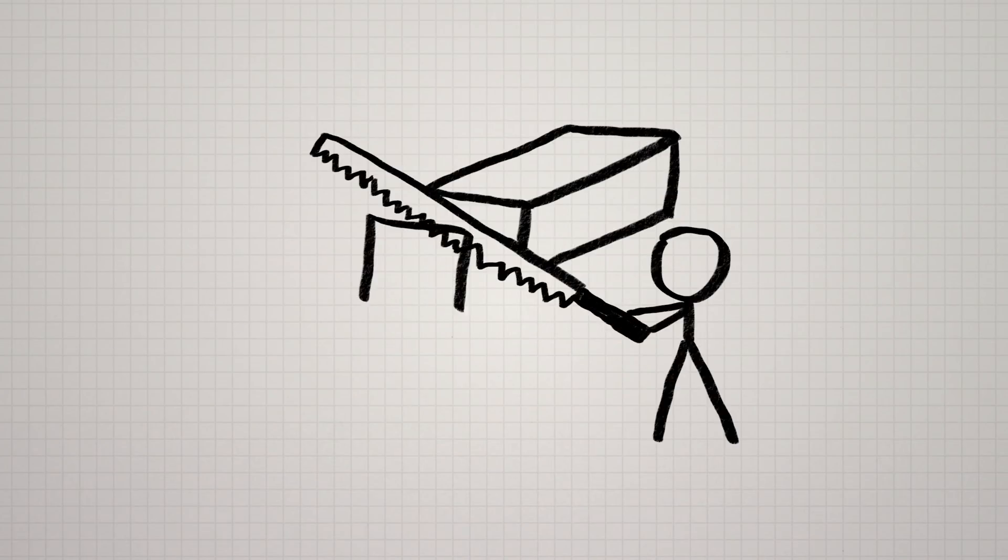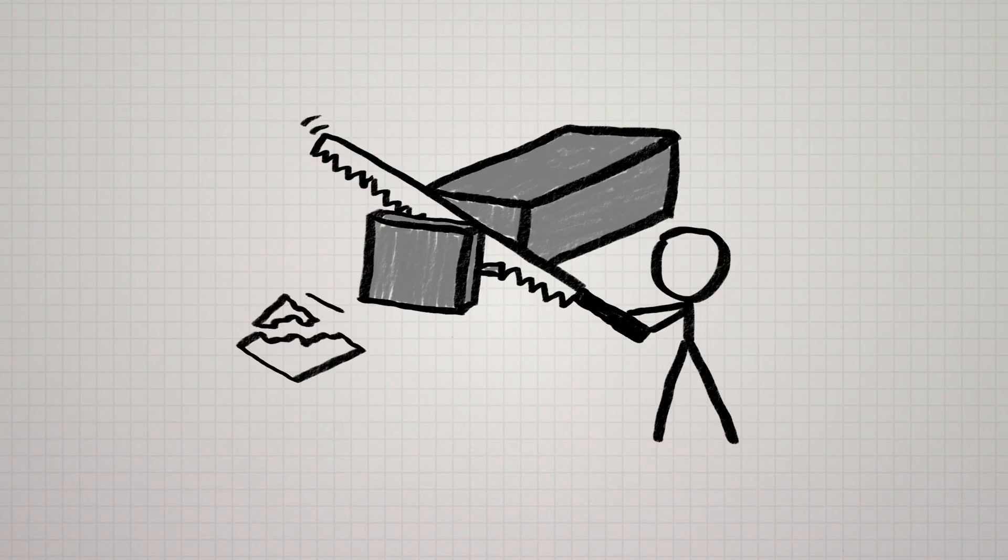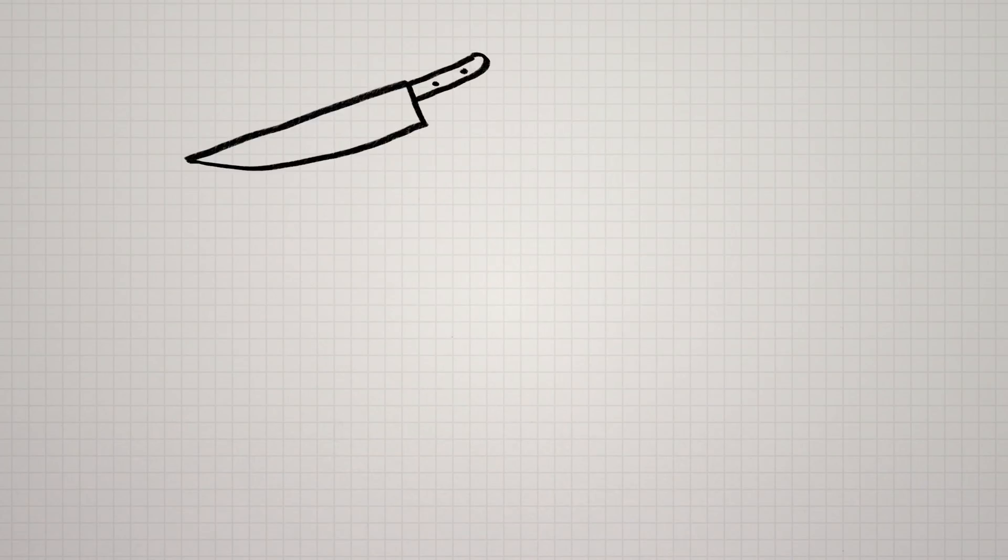Because when you cut something with a saw, like with normal silicon wafers, there are two problems. One, you can't cut a slice too thin, otherwise it might get broken. Typical solar panel wafers are cut to about 0.15 millimeters. And two,